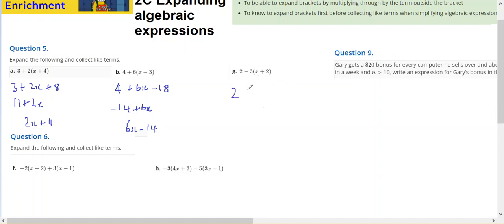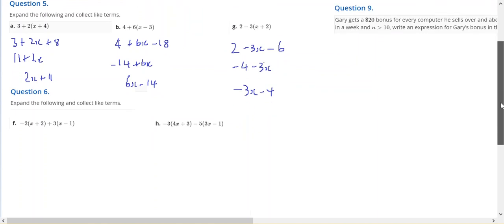2 minus 3 times x gives 3x minus 2 times 3 is minus 6. That gives me negative 4 minus 3x, or again minus 3x minus 4 is the same expression.